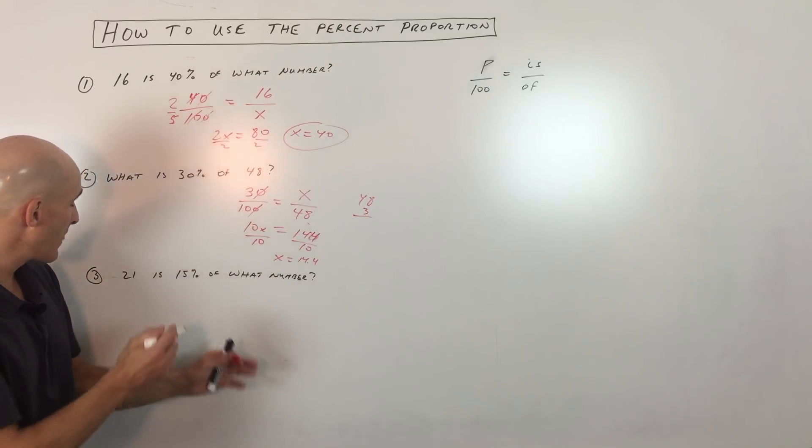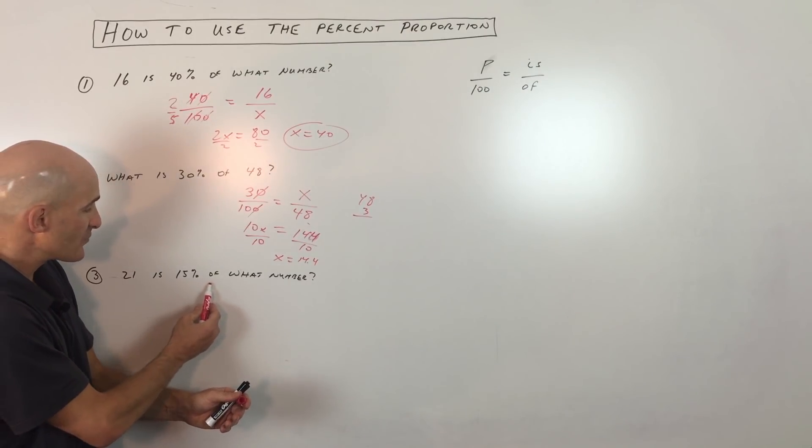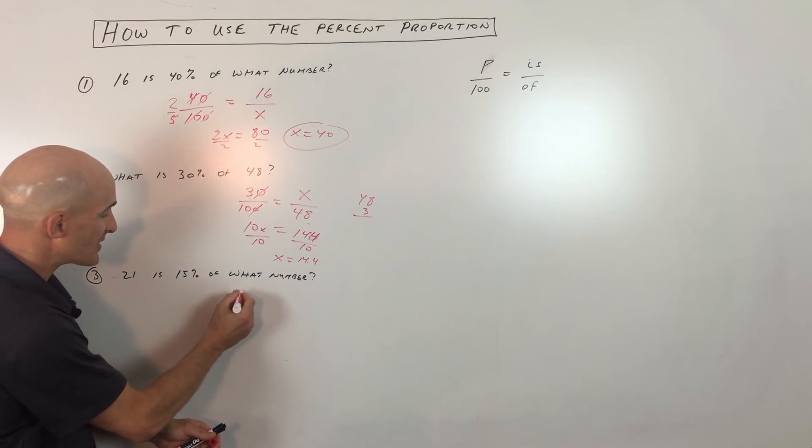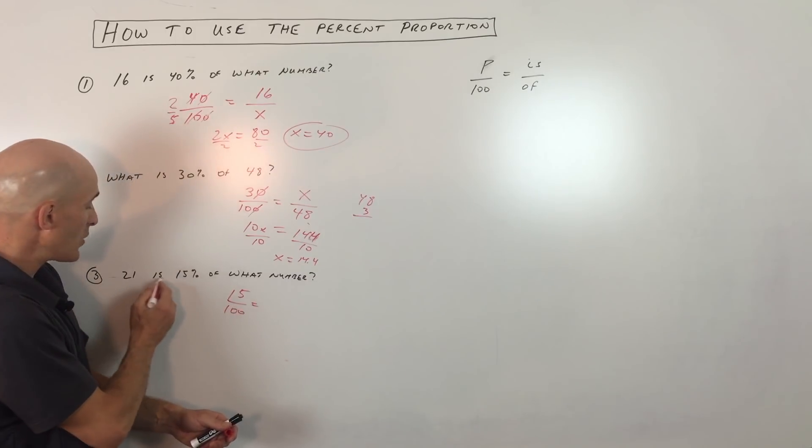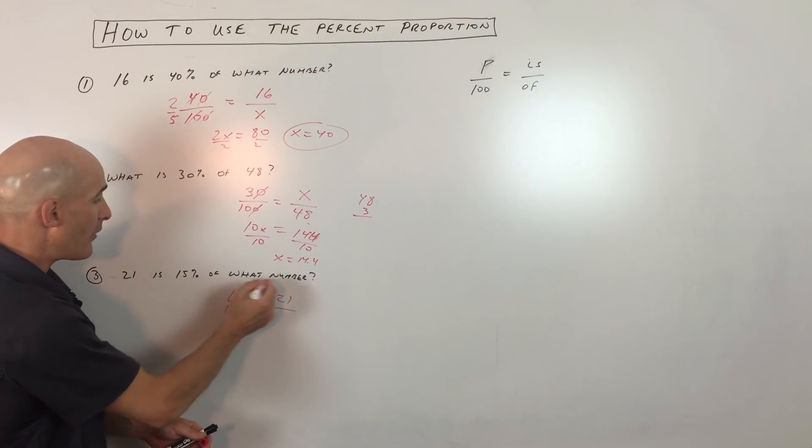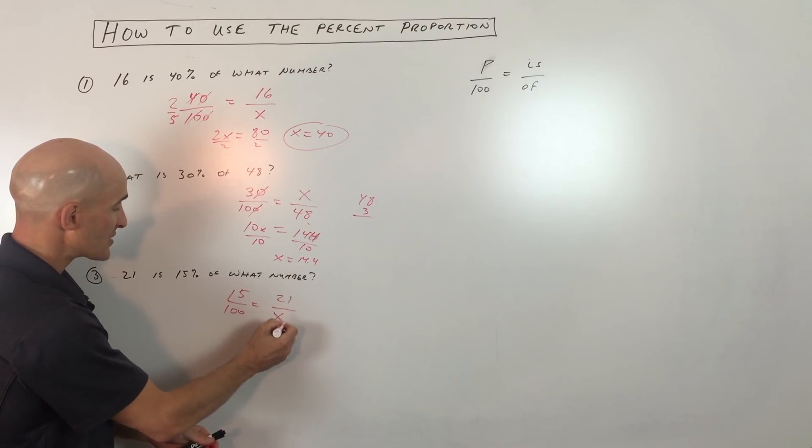Let's get into the last example here. It says 21 is 15% of what number? So here we go, 15%, that's 15 parts out of 100. 21 is, so that's 21, of what number? We don't know, so that's going to be X.